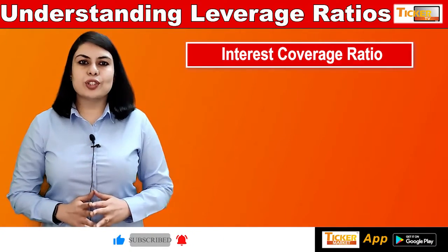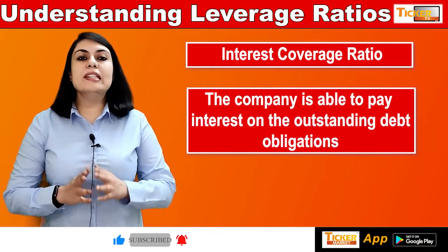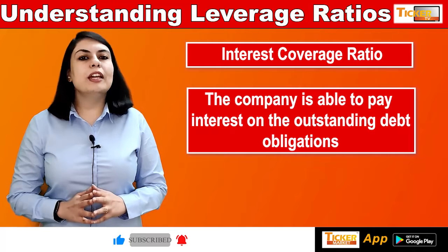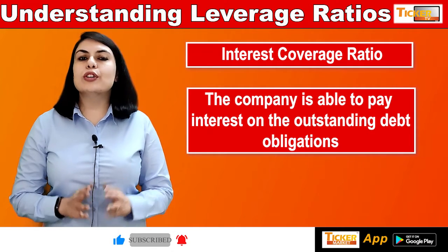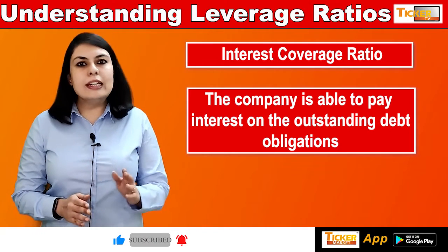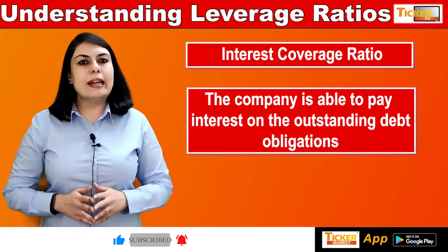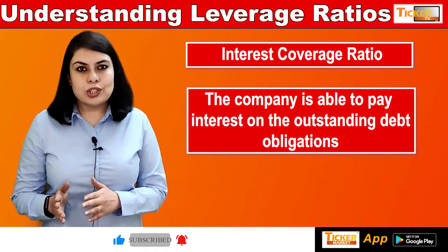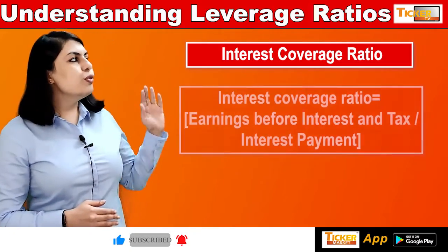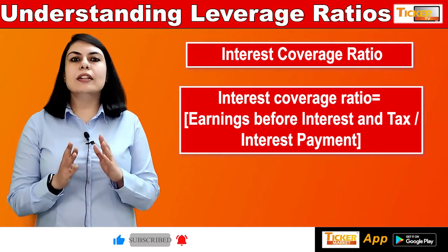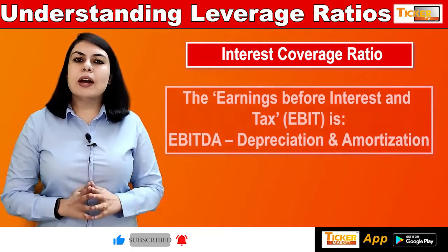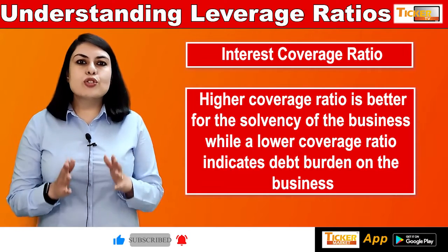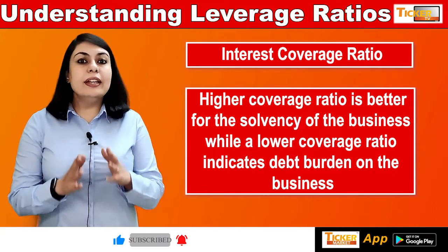The fourth ratio is the interest coverage ratio, used to determine whether the company is able to pay interest on its outstanding debt obligations. This ratio helps us interpret how easily a company can pay its interest payments. For example, if a company has an interest burden of 100 rupees versus an income of 400 rupees, we can clearly say it has sufficient funds to service its debt. It is also referred to as the debt service ratio and debt service coverage ratio. The formula is earnings before interest and tax (EBIT) divided by interest payment, where EBIT is calculated as EBITDA minus depreciation and amortization. A higher coverage ratio is better for solvency, while a lower ratio indicates a higher debt burden.